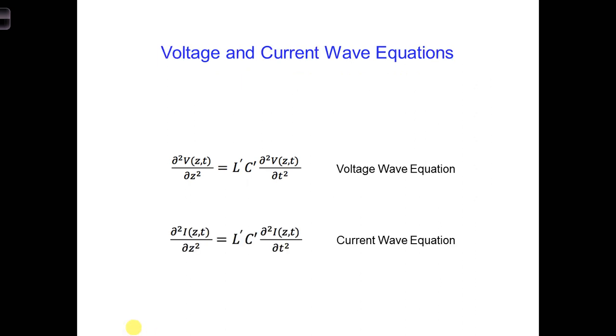So here I have the voltage wave equation and the current wave equation after we solve for both. Looking at these two equations, you can see the voltages and the currents both vary in time and in space. These are wave equations, meaning that we have voltage and current waves traveling down the transmission line. And you can see their form is very similar.